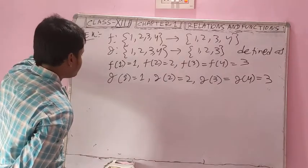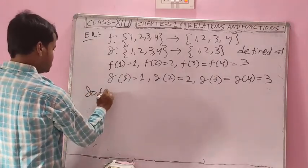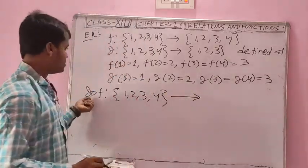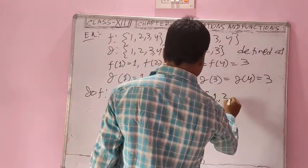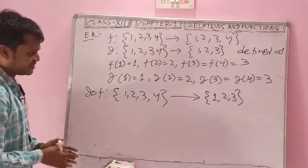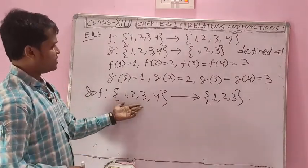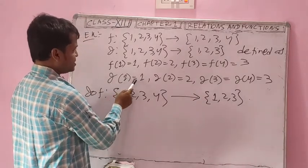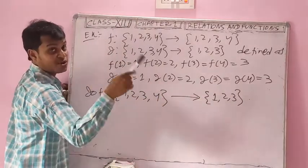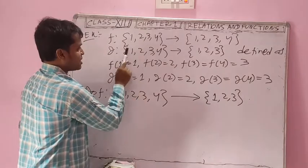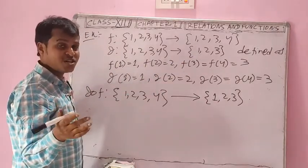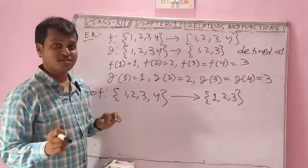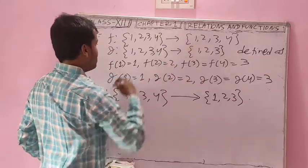Check whether G is onto: the range of G is {1, 2, 3}, which equals the codomain of G, which is {1, 2, 3}. So G is onto. Check F: the range of F is {1, 2, 3}, which is not equal to the codomain {1, 2, 3, 4} since element 4 has no preimage. So F is not onto.